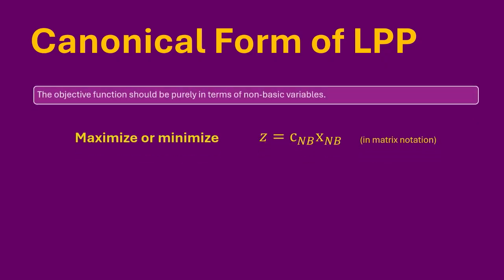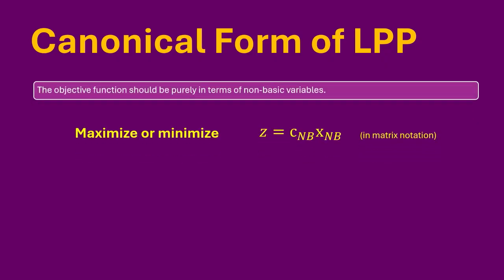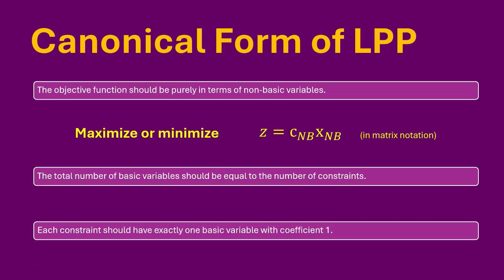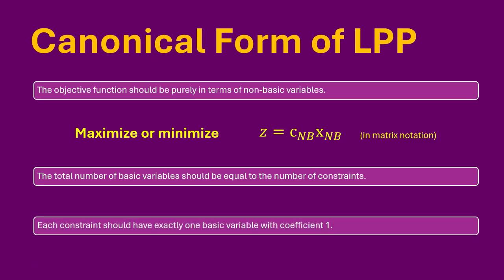The three additional requirements for the canonical form are: the objective function should be purely in terms of non-basic variables; the total number of basic variables should be equal to the number of constraints; and each constraint should have exactly one basic variable with coefficient 1. The canonical form of a given LPP will also represent a standard form of the same problem, but the opposite does not always hold true.